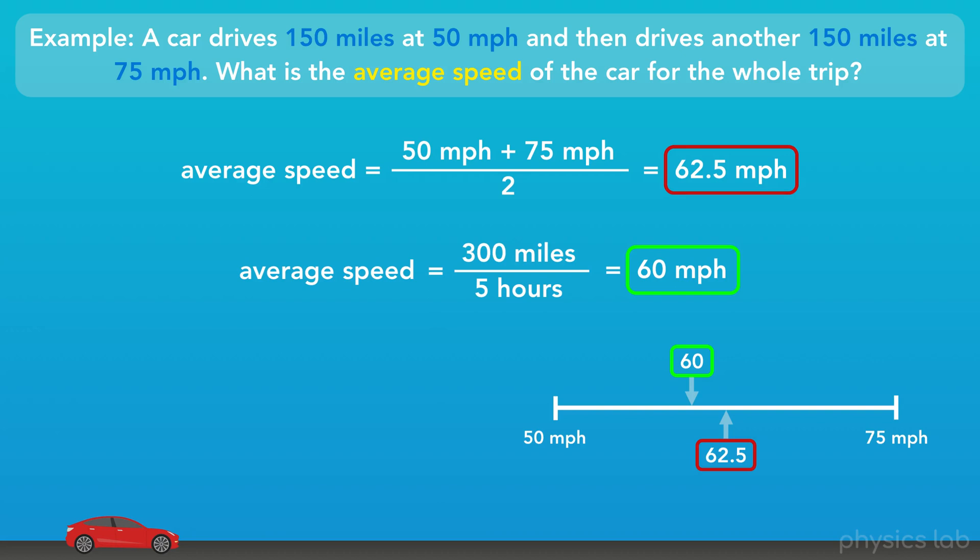The car even drove the exact same distance at each of these two speeds. So, it feels like each speed is equally important. Like, if you imagined a balance, each speed would have equal weight. However, the times are not the same. We found that the car was driving 50 miles per hour for 3 hours, and 75 miles per hour for only 2 hours. So, since the car was driving at 50 miles per hour for a longer time, the 50 has more weight to it. So, the average speed is closer to 50 than 75.